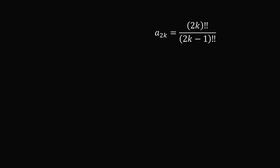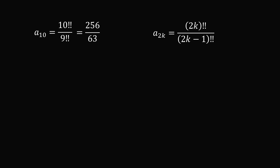So we want to evaluate a10, which is equal to 10 double factorial divided by 9 double factorial. With careful calculation, this is equal to 256 divided by 63, which is approximately equal to 4.06.